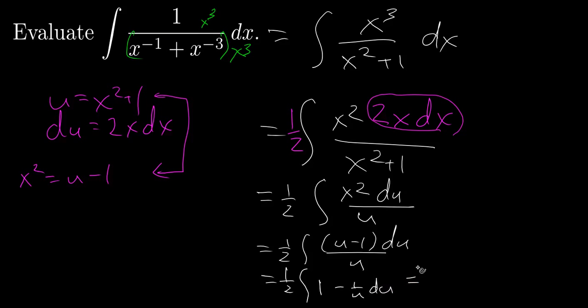And so finally, when I take the antiderivative, I have 1 half times the quantity u minus the natural log of u, well really the absolute value of u, plus c, an arbitrary constant.